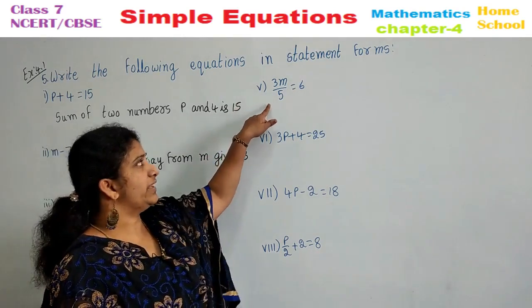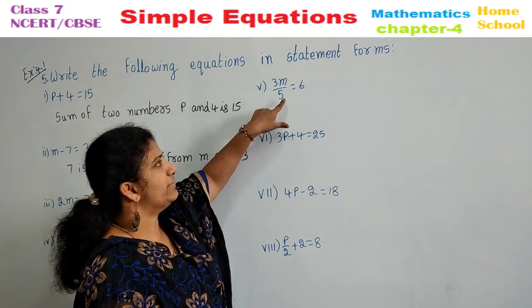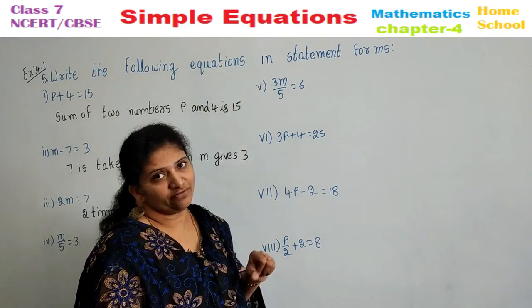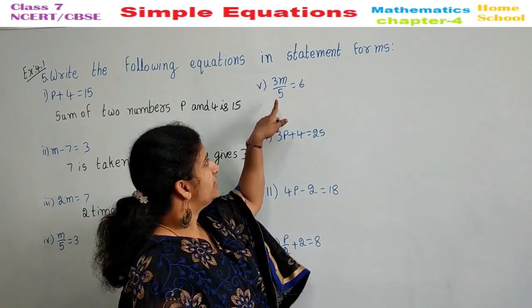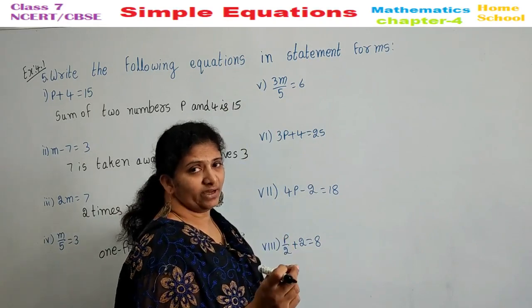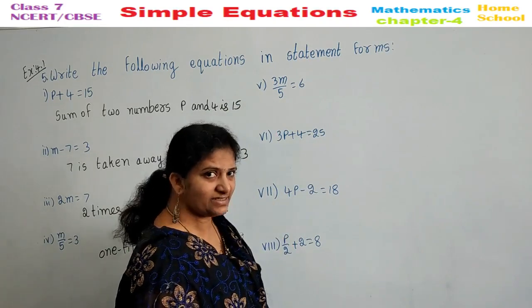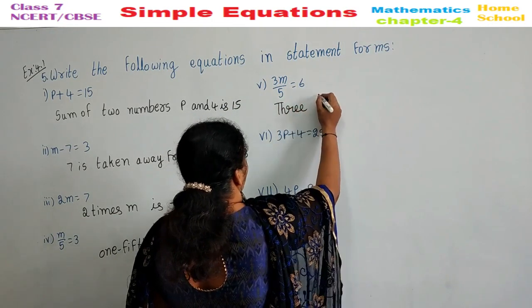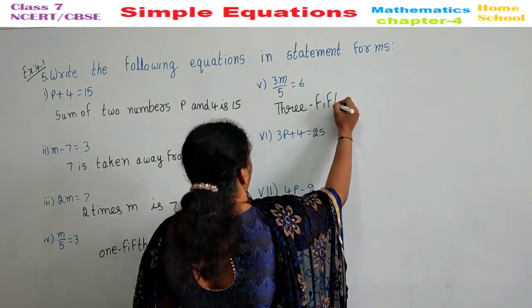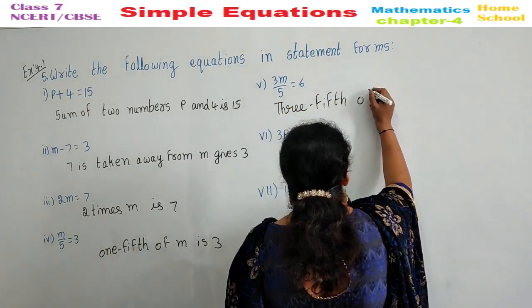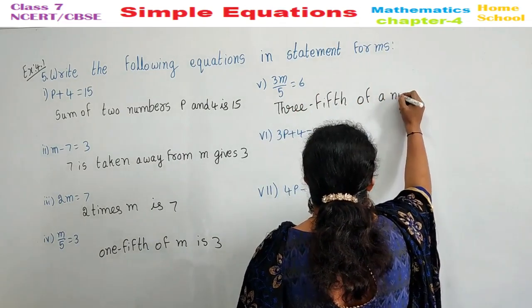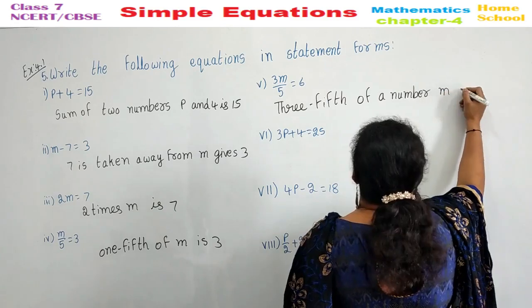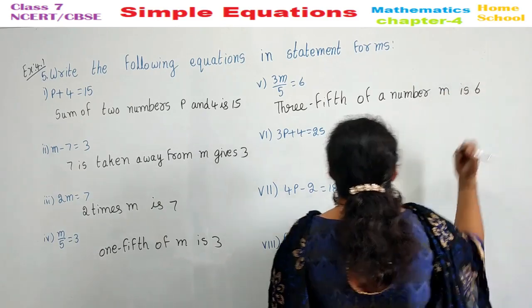Fifth one: 3M by 5 is equal to 6. Split this — 3 by 5. Three fifths of a number M is 6.